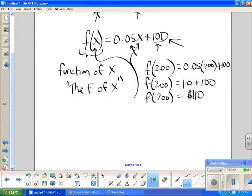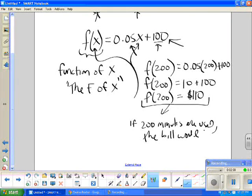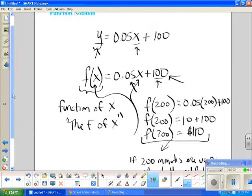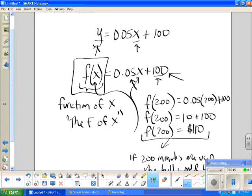You might see this written somewhere and ask to interpret it. And interpreting this in real words is if 200 minutes are used, the bill would be $110. Function notation is just referring to using a different way of writing y rather than writing y itself.